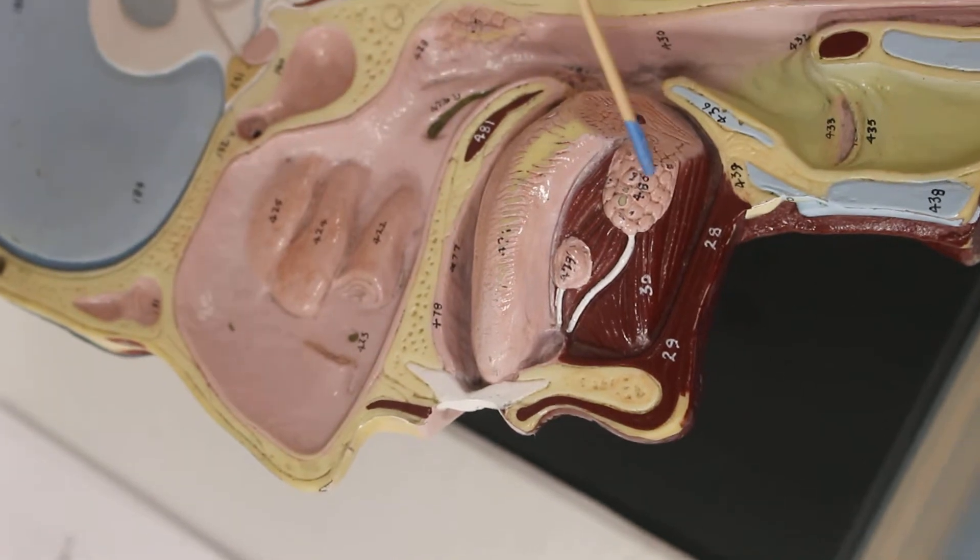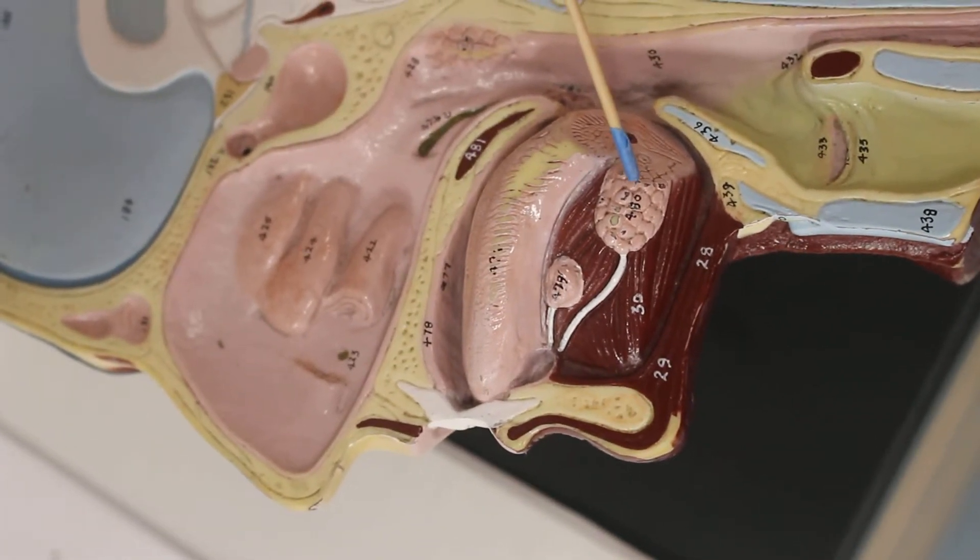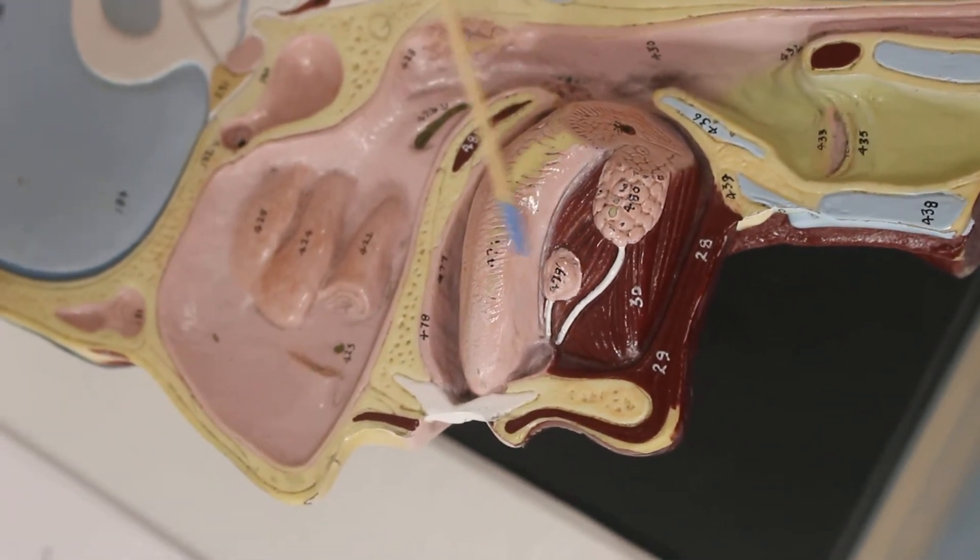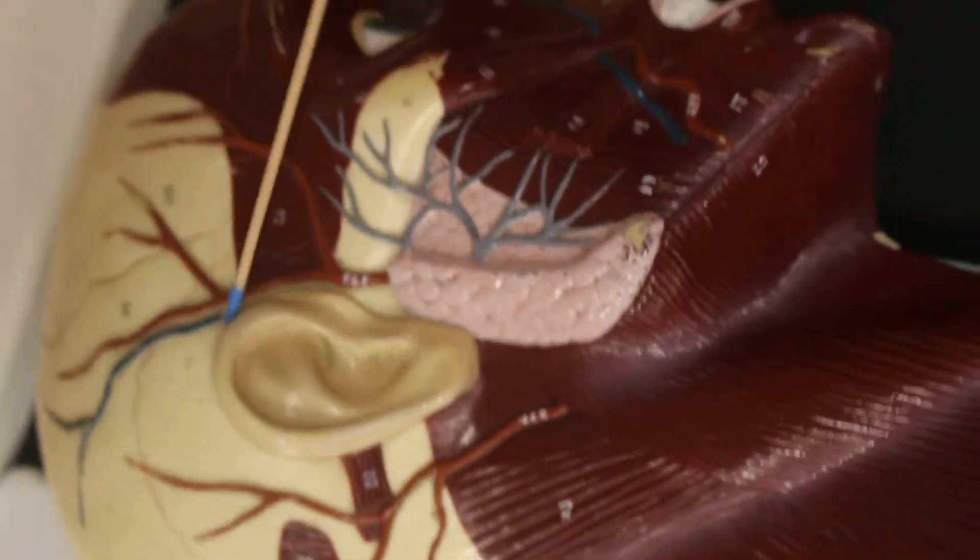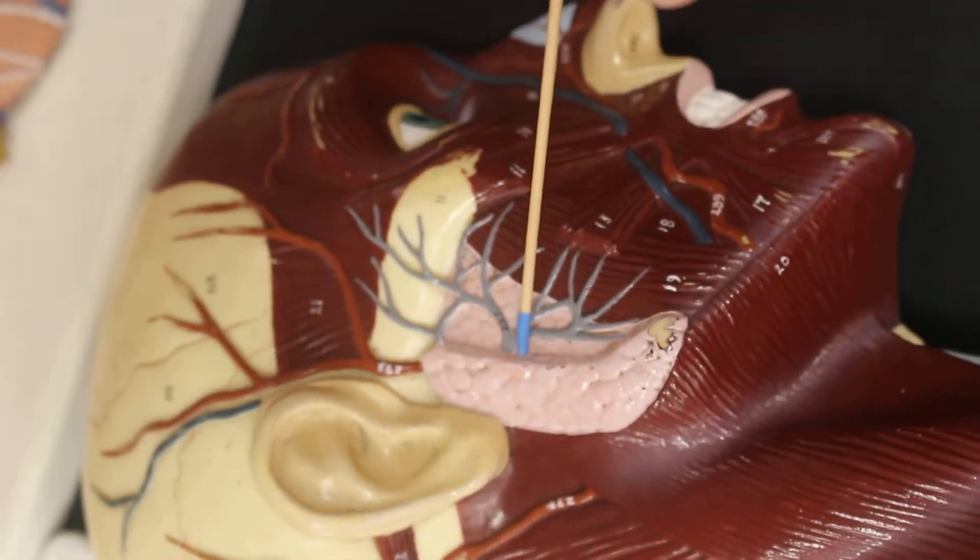The uvula. This is the submandibular gland, the sublingual gland. And on the side of the head here is the parotid gland.